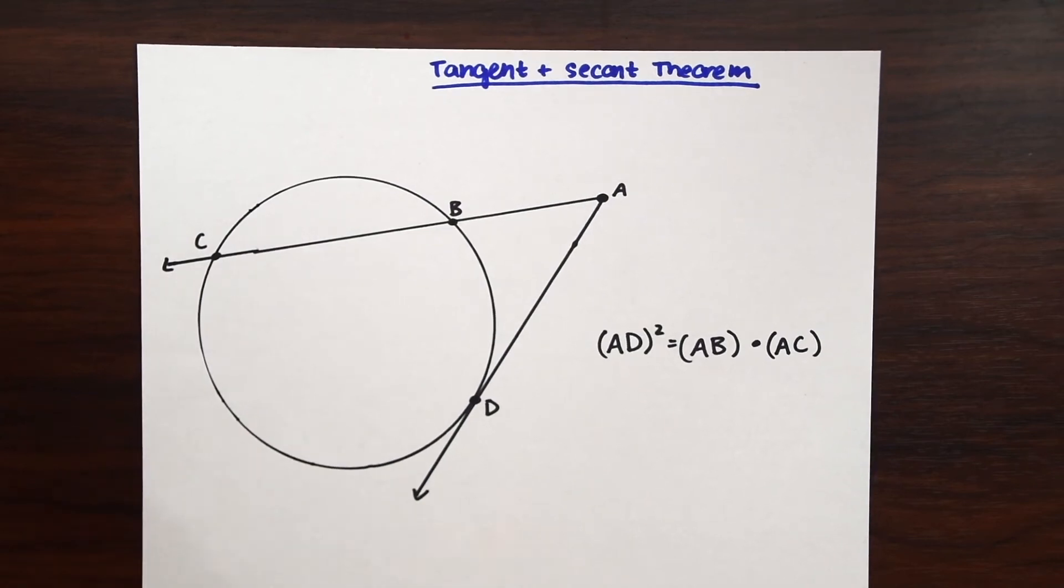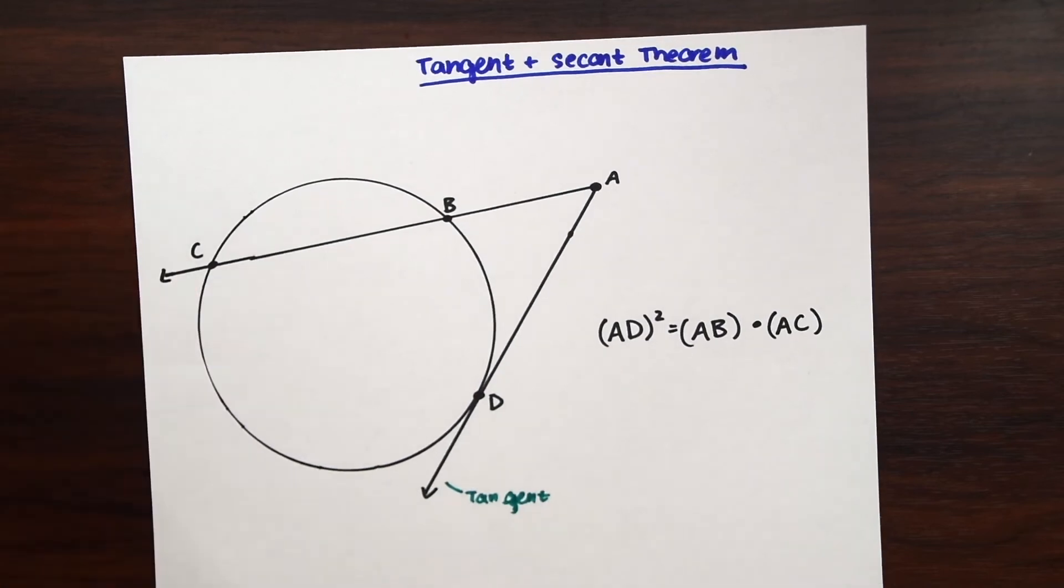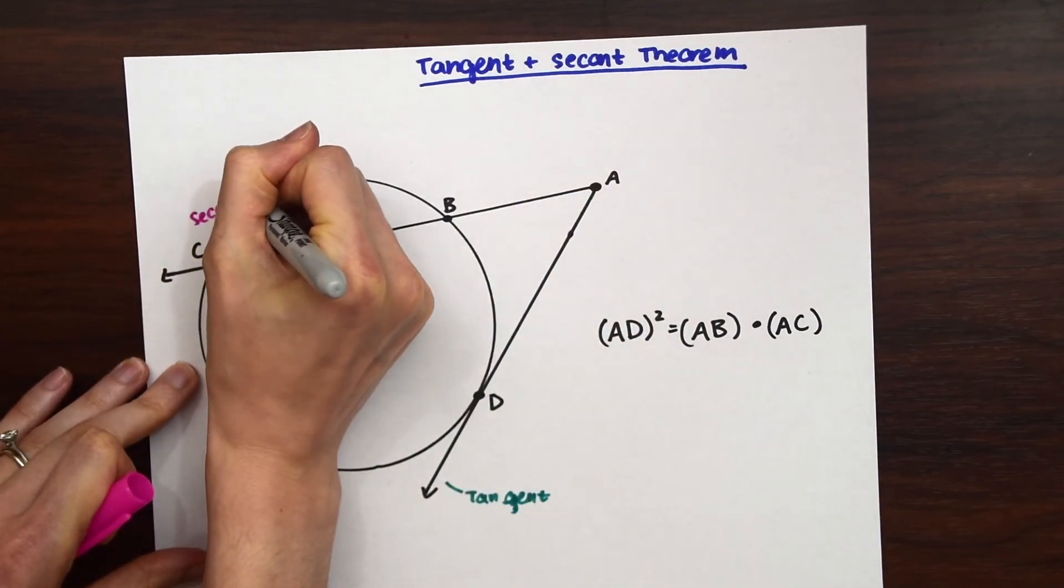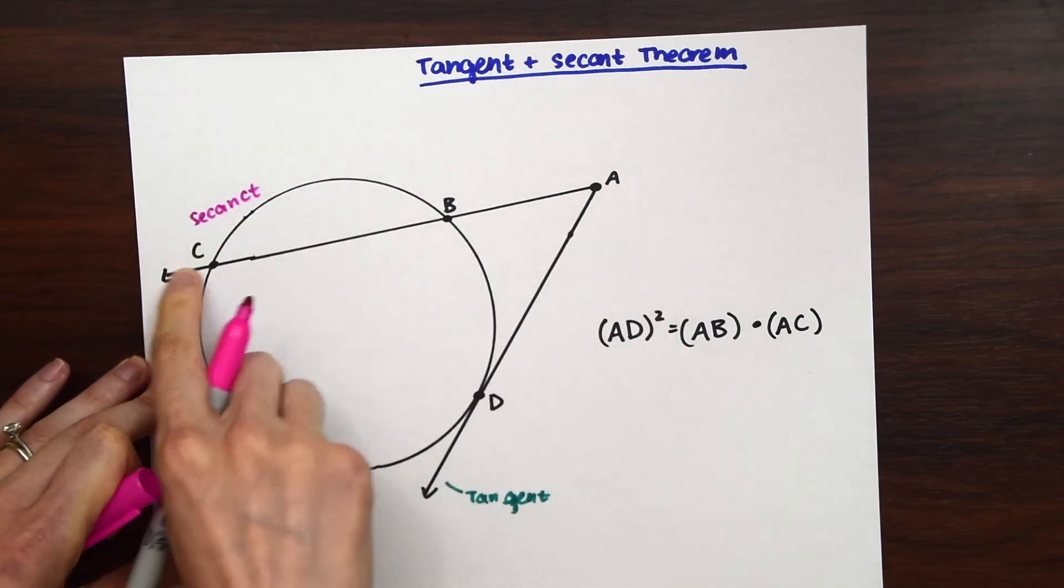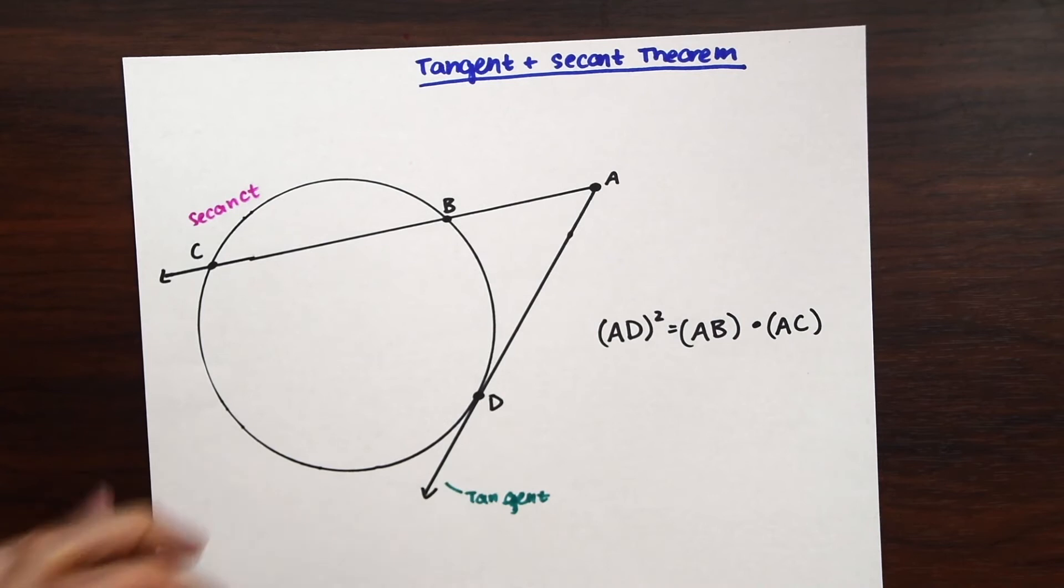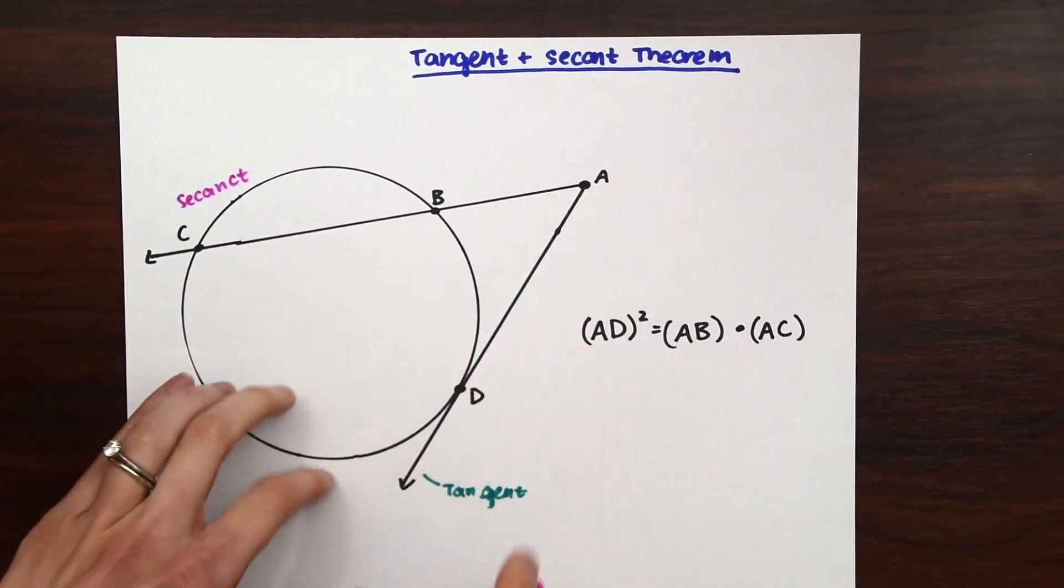So the secant is line AC and the tangent is line AD. So when we look at our formula what this tells us is that AD squared, the length of the tangent squared, is equal to the length of this whole thing, is equal to the length of AB.